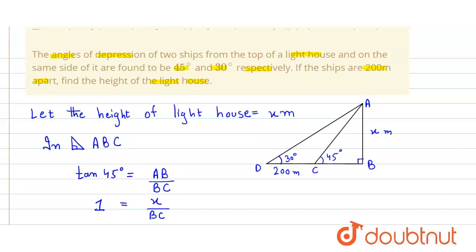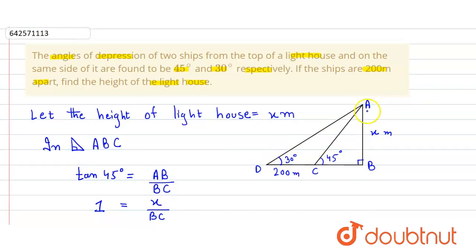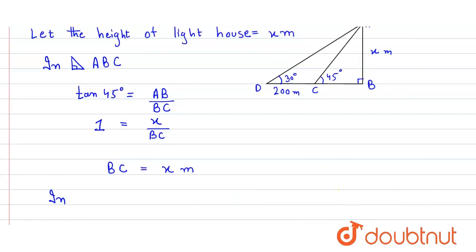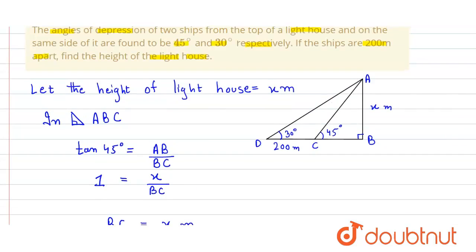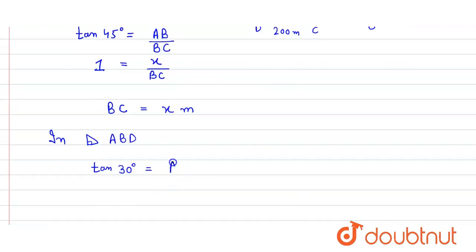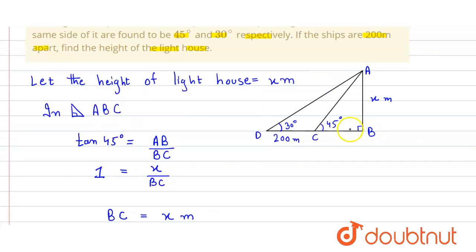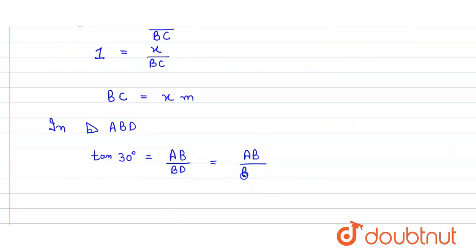Now we apply the trigonometric ratio in the bigger right angle triangle ABD. We use tan(30°) which equals AB divided by BD. BD can also be written as BC plus CD, so it is AB divided by BC plus CD.